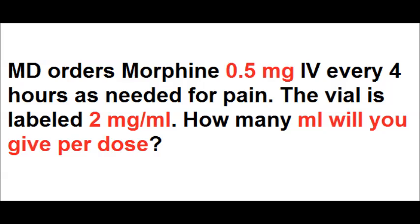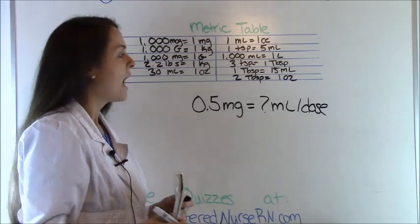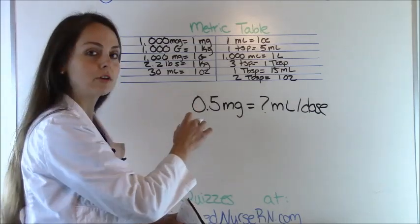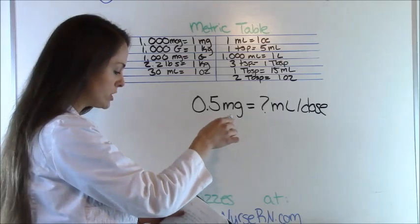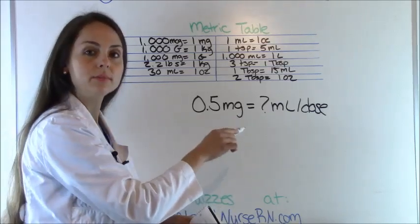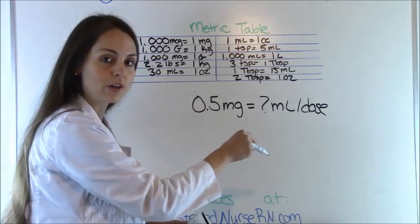So let's get started. Problem number one: MD orders morphine 0.5 milligrams IV every four hours as needed for pain. The vial is labeled two milligrams per ml. How many ml's will you give per dose? The problem is asking us: the doctor ordered 0.5 milligrams, and now the vial has two milligrams per ml — how many milliliters per dose are we going to draw up?